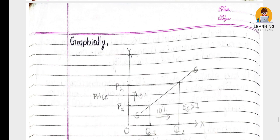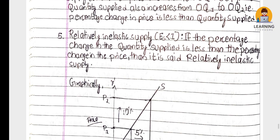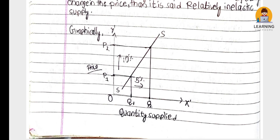Relatively inelastic supply: if the percentage change in quantity supplied is less than the percentage change in price, then it is relatively inelastic supply - which is the opposite of relatively elastic supply. Graphically, on the y-axis we represent price and on the x-axis we represent quantity supplied. If quantity supply changes 5% and price changes 10% or 20%, that is relatively inelastic supply.